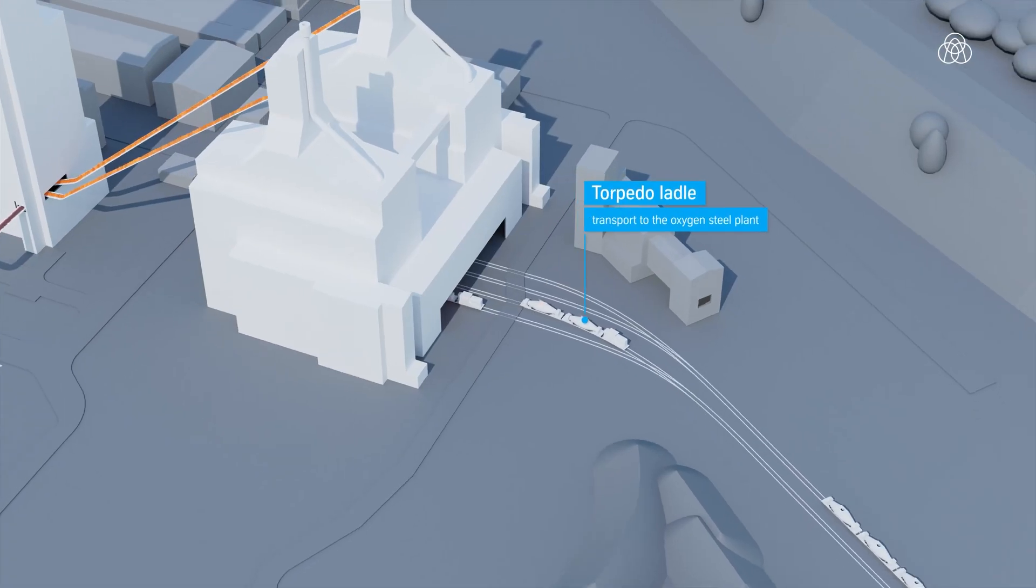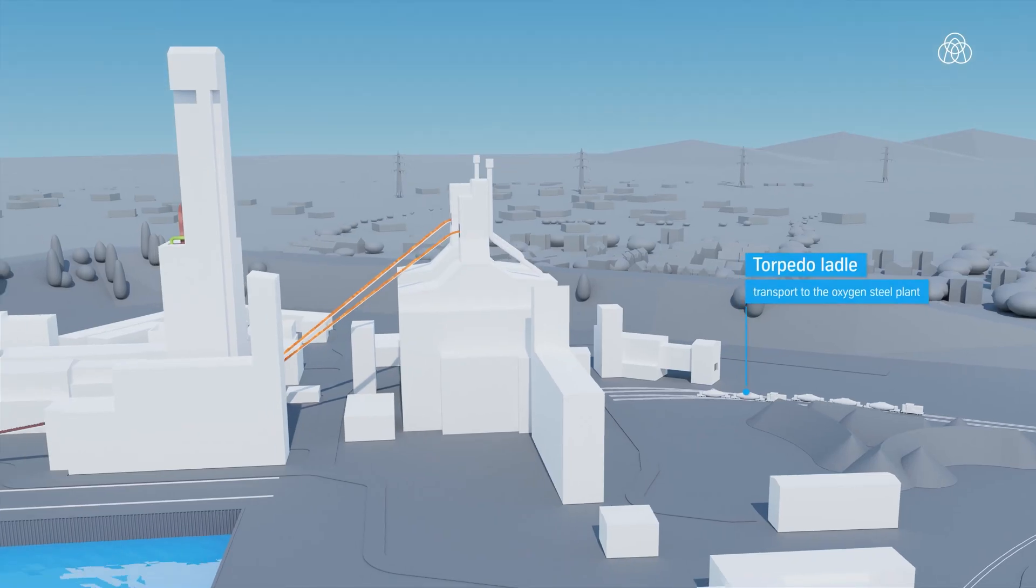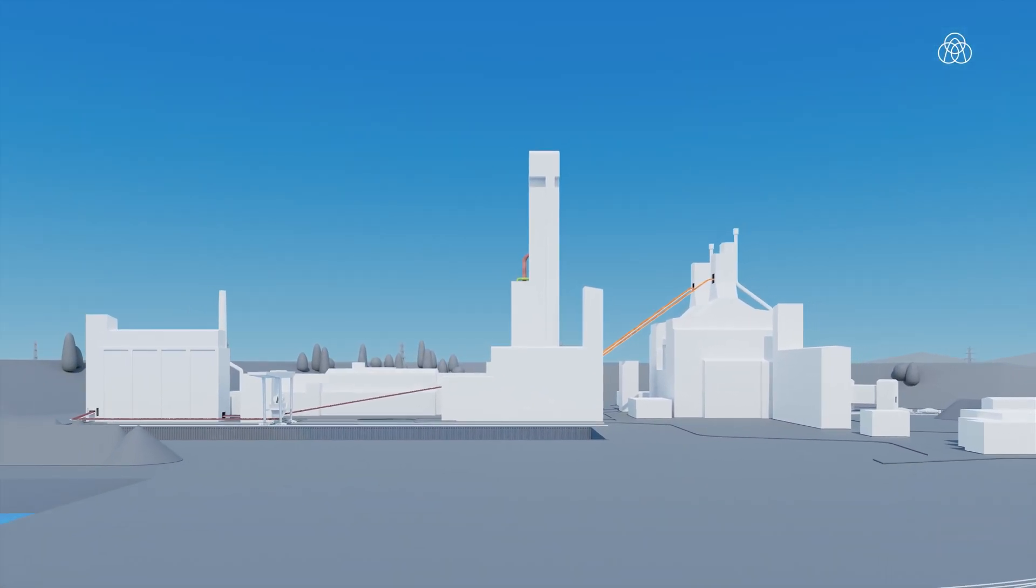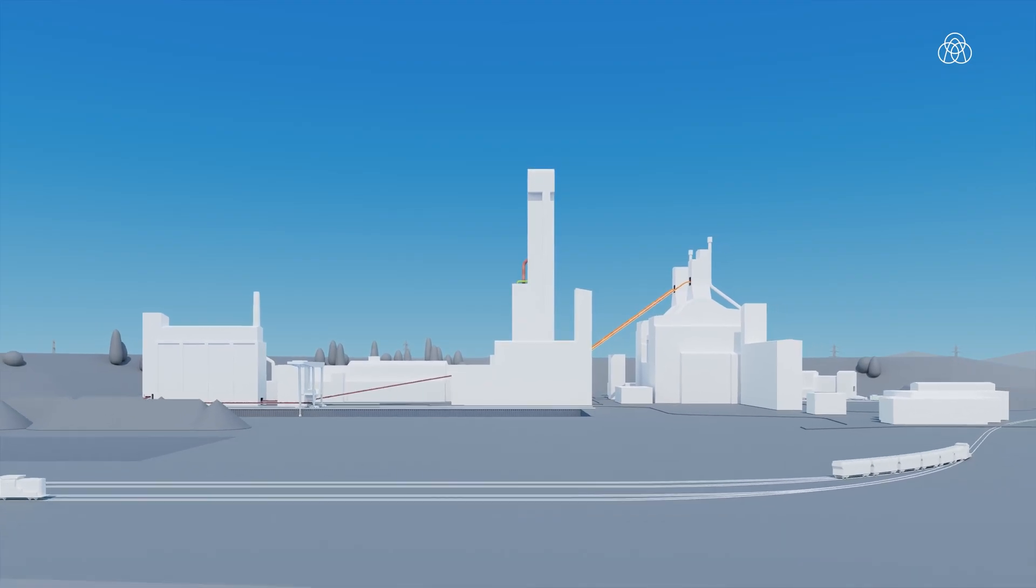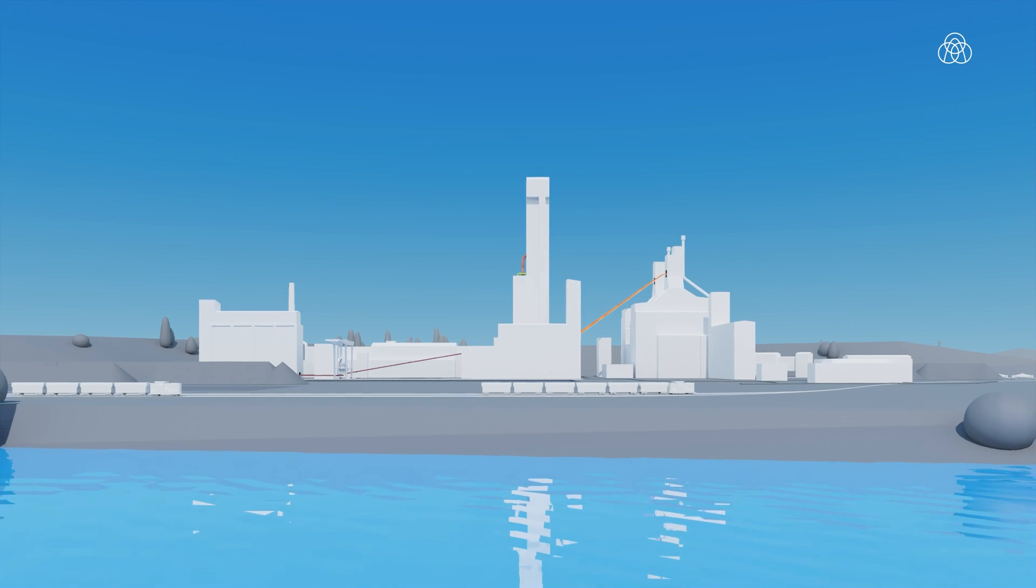Our innovative concept, consisting of the direct reduction plant and the electric melters, enables us to maintain all subsequent process steps from the steelworks and thus guarantee a consistently high product quality for CO2-reduced steel.